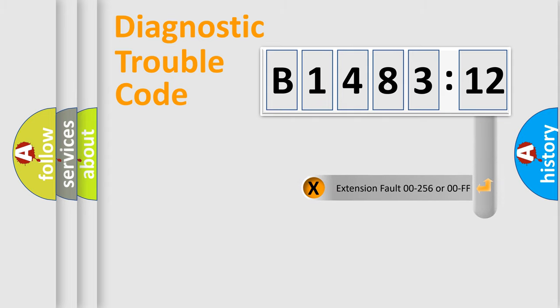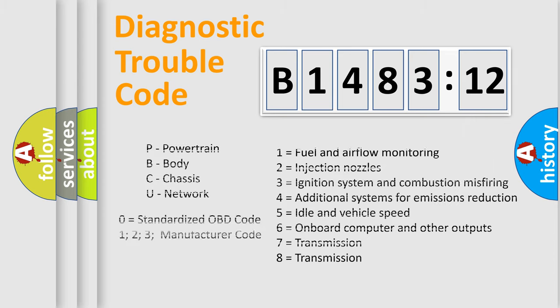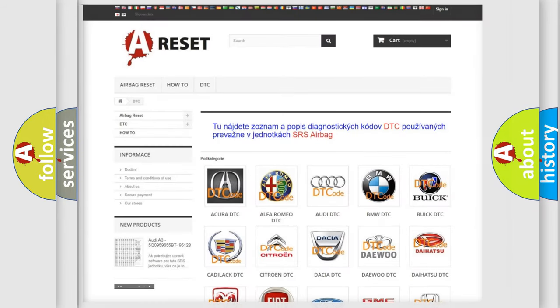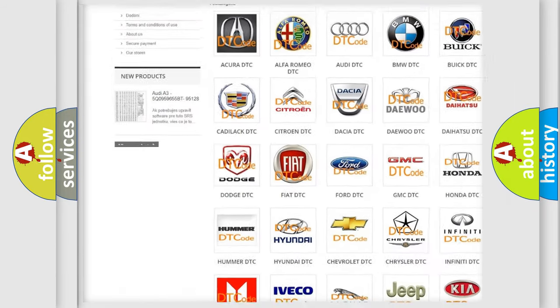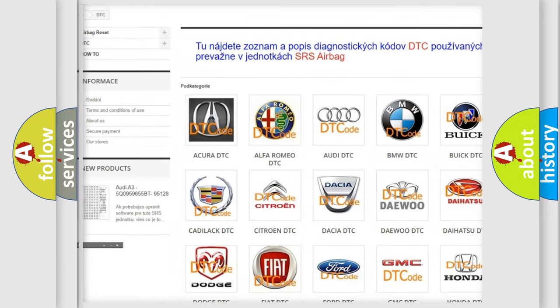Our website airbagreset.sk produces useful videos for you. You do not have to go through the OBD2 protocol anymore to know how to troubleshoot any car breakdown. You will find all the diagnostic codes that can be diagnosed in Chrysler vehicles, along with many other useful things.